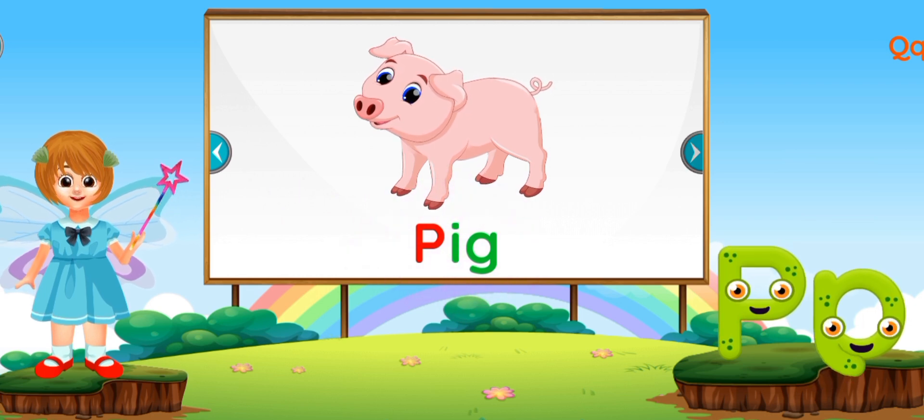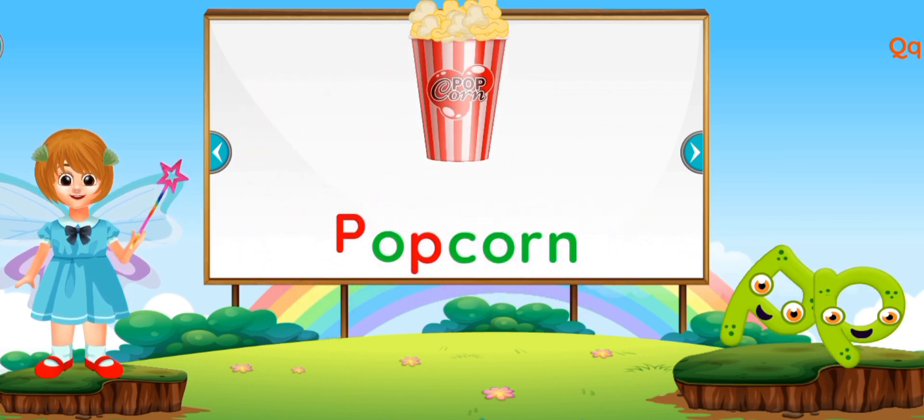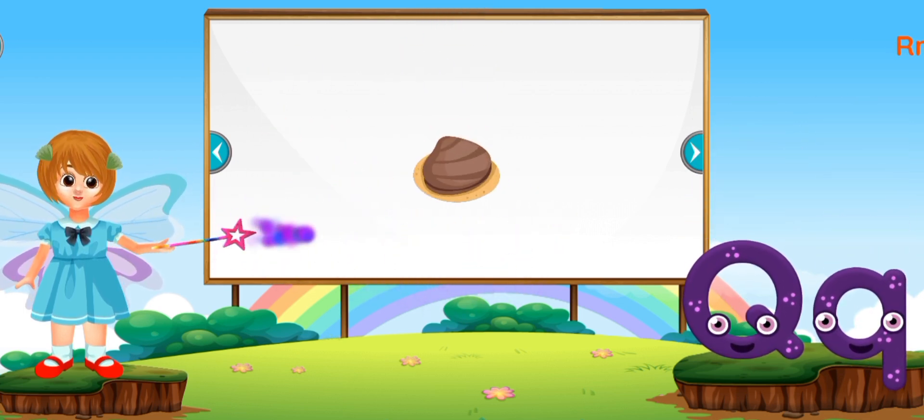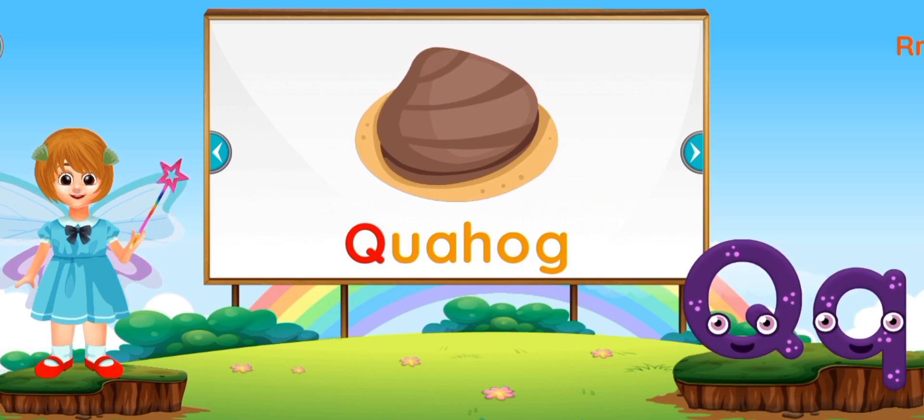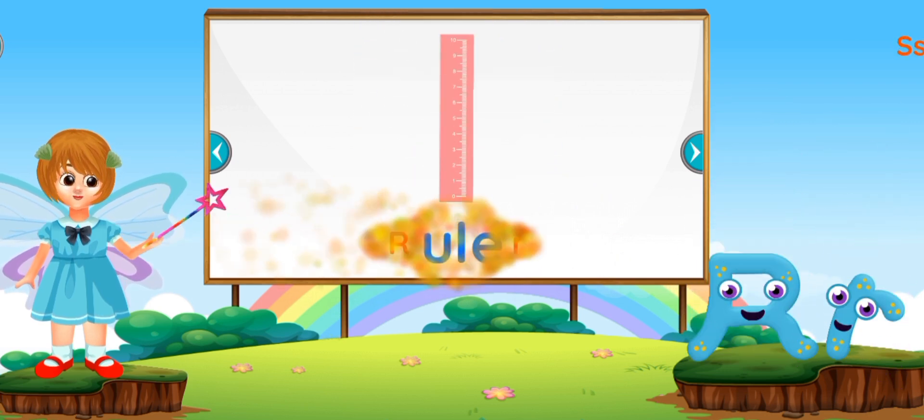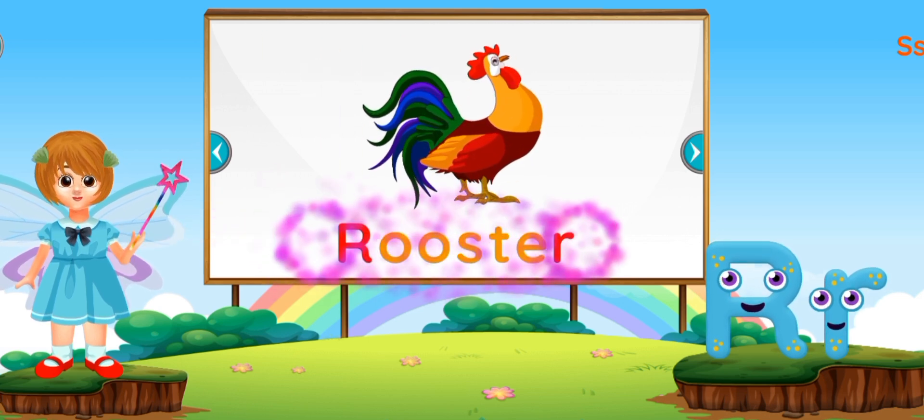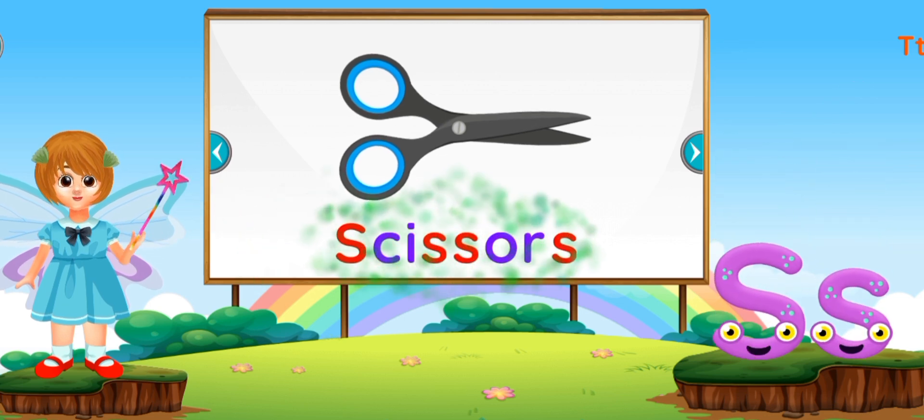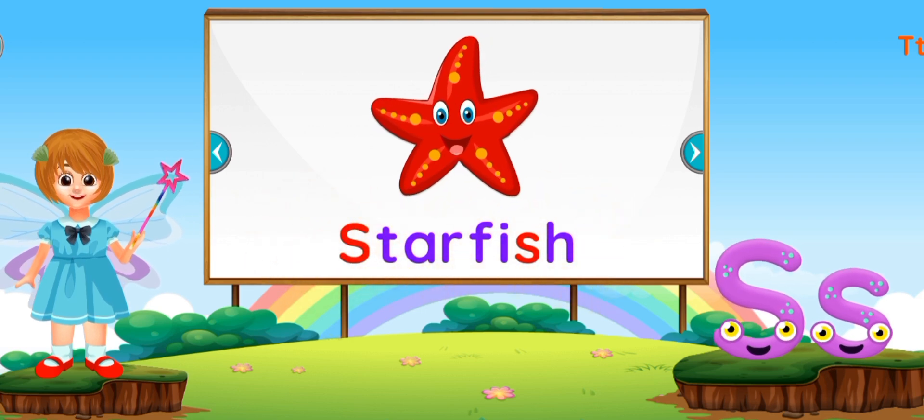P for Pig, P for Popcorn. Q for Quail, Q for Mohawk. S for Caesar, S for Starfish.